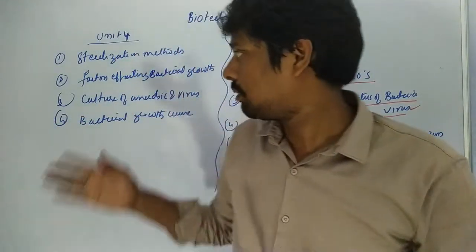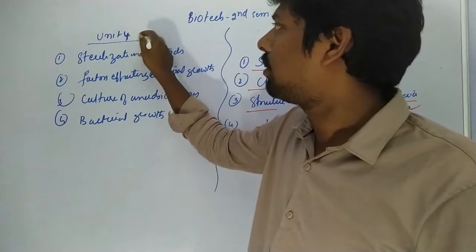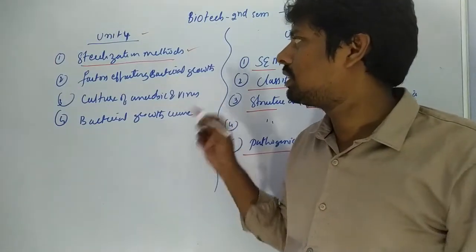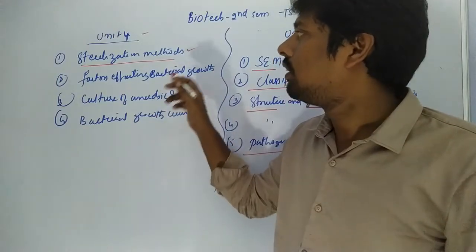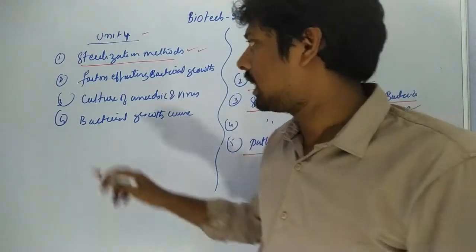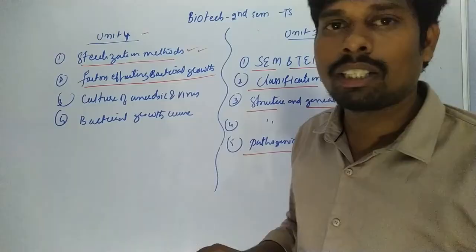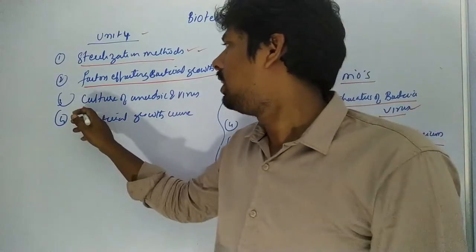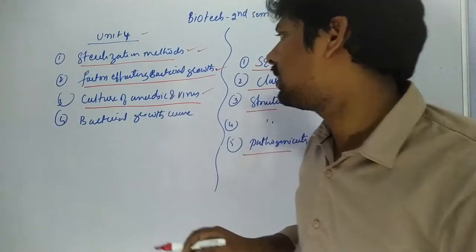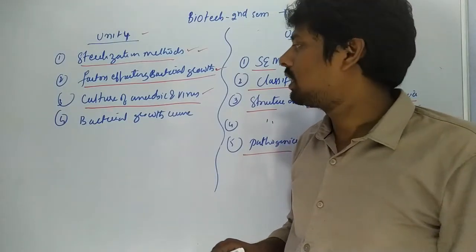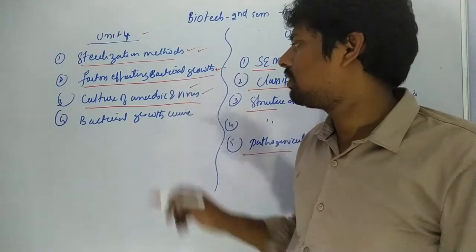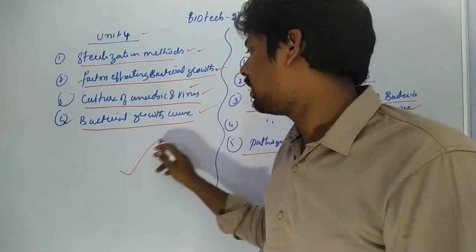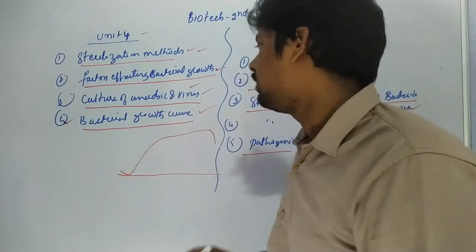Remaining Unit 4 has 4 important questions. First question: sterilization methods — physical and chemical methods. This is a sure question, both long answer and short answer. Second: factors affecting bacterial growth. Third: culture of anaerobic bacteria and virus.